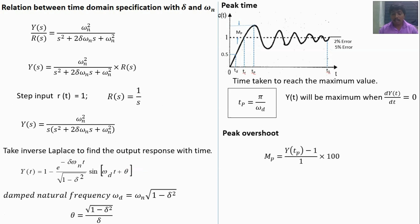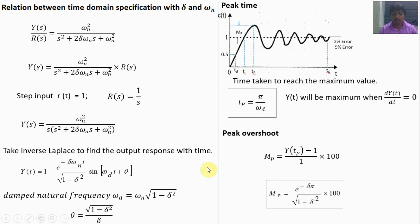For peak overshoot, we already defined it as (peak value − desired value) / desired value × 100. Substituting the peak value into y(t), we get peak overshoot = e^(−πζ / √(1−ζ²)) × 100. You should remember this formula — do not derive peak time or peak overshoot during the exam. Just recollect the formula and substitute to find the answers.